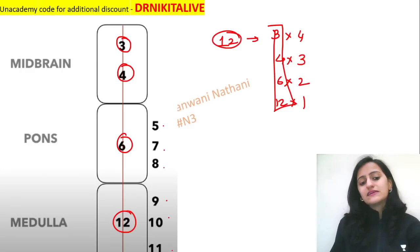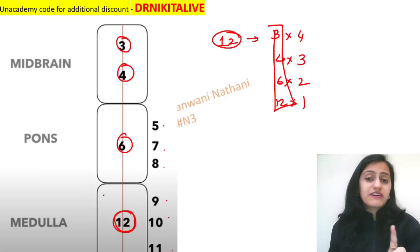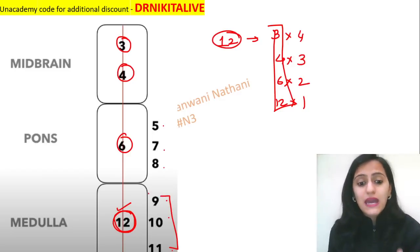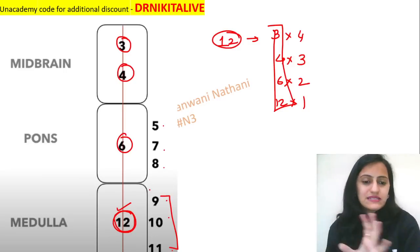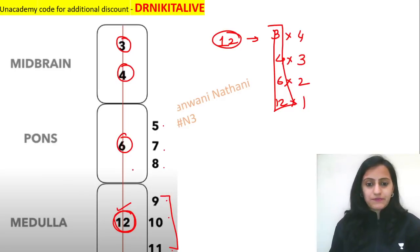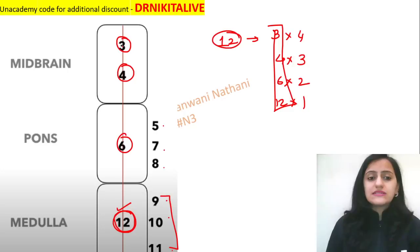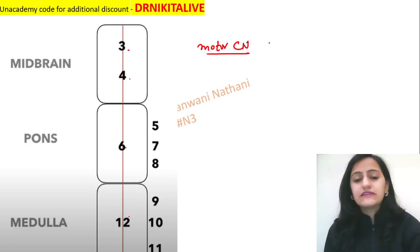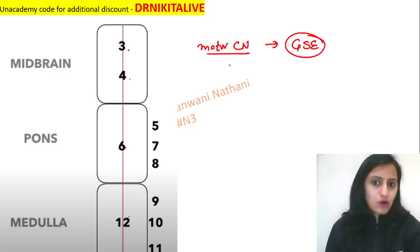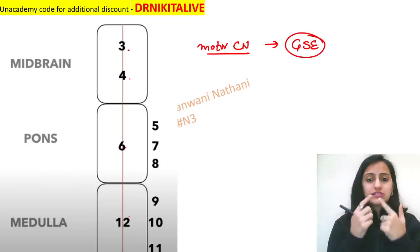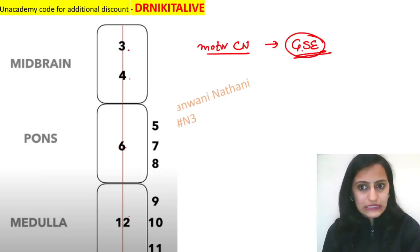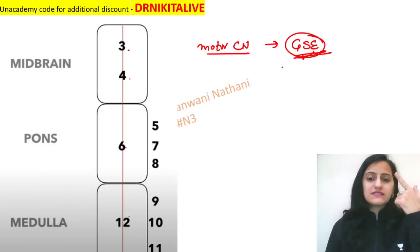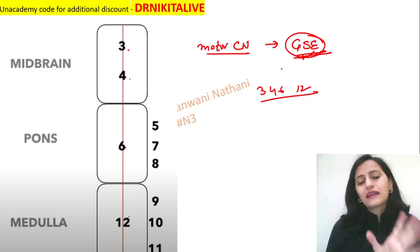For example, CN12 is paramedian, so it will be affected in medial medullary syndrome and spared in lateral medullary syndrome. Note that CNs 3, 4, 6, and 12 are motor cranial nerve nuclei belonging to the general somatic efferent column — CNs 3, 4, 6 control eye muscles, and CN12 controls tongue muscles. So these four are paramedian in location.